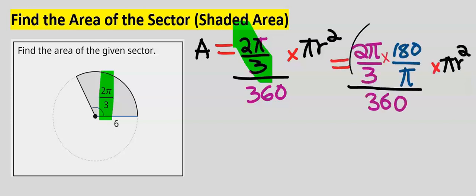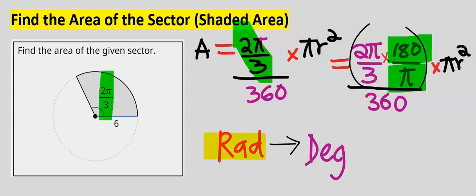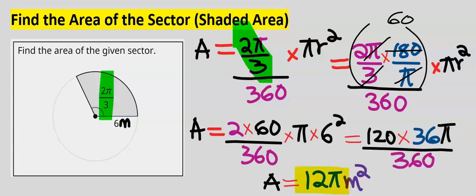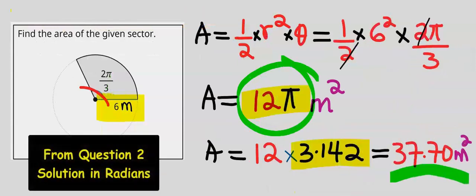To correct this, multiply the given angle by 180/π to convert from radians to degrees. With this conversion, π cancels, 3 becomes 1, and 180/3 is 60. Simplifying further, the area is 12π. Since the radius is in meters, the unit is meters squared — the same answer as with the radians formula.